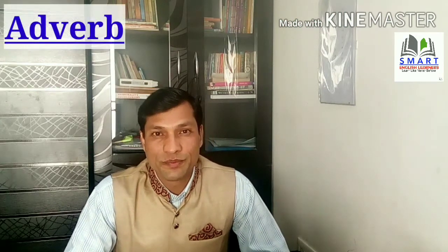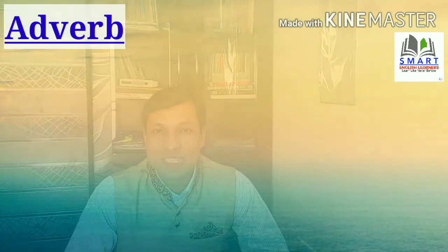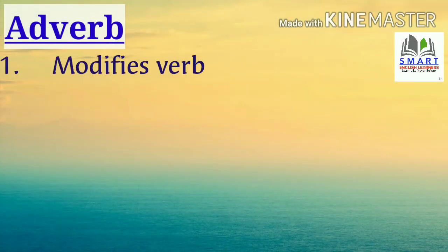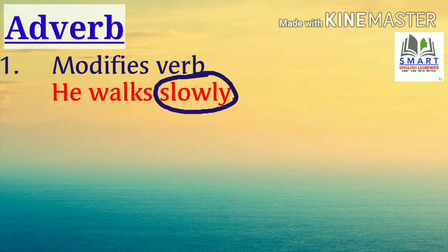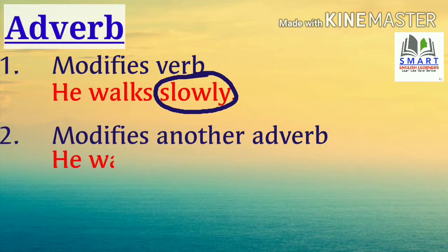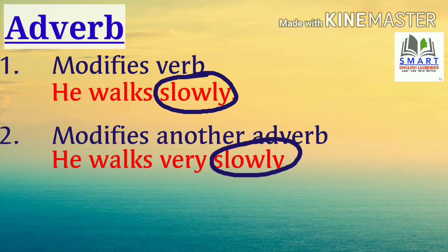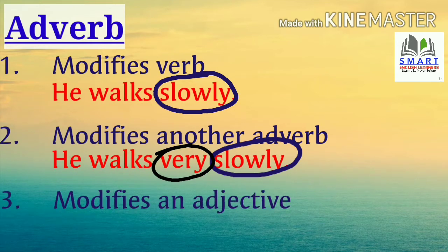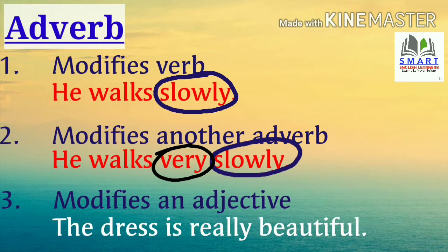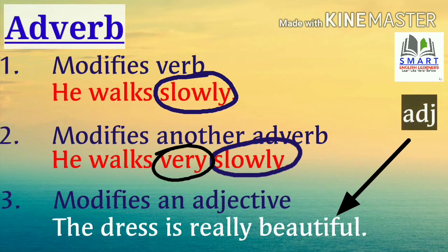Now let's move on to adverbs. Adverbs perform either of these three functions. One, it modifies a verb — for example, 'he walks slowly.' Two, it modifies another adverb — for example, 'he walks very slowly.' Here, slowly is an adverb, but the word very tells us how slowly he walks, so very is also an adverb. Three, it modifies an adjective — for example, 'the dress is really beautiful.' Here, beautiful is the adjective and really modifies it, so really is an adverb.